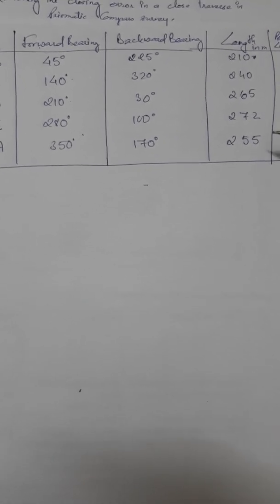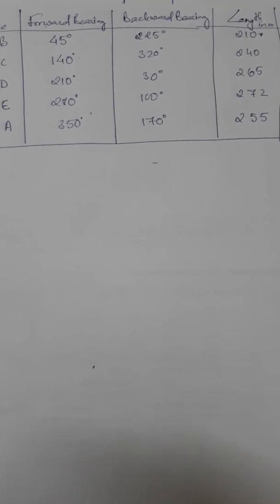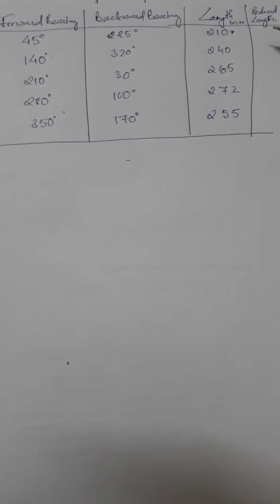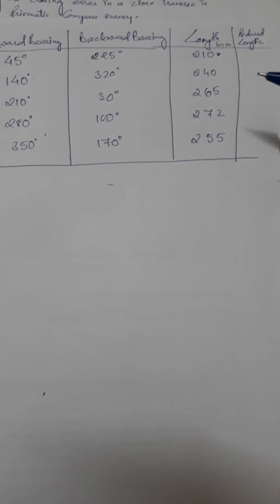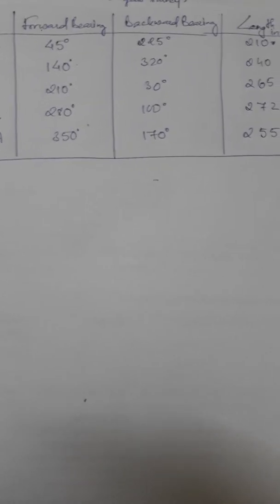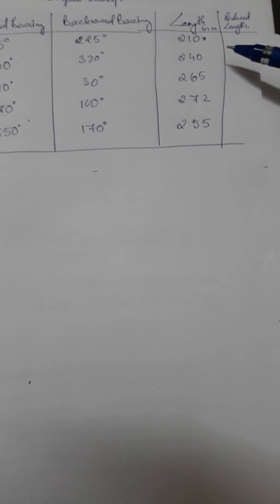In order to plot on a piece of paper, you first have to reduce the length to a suitable scale. Sometimes the RF is given, and in that case you reduce the length with respect to that RF. Otherwise you can choose a reduced length suitable for the paper where you are plotting. In this case I am taking a scale where one centimeter represents 50 meters on the ground.